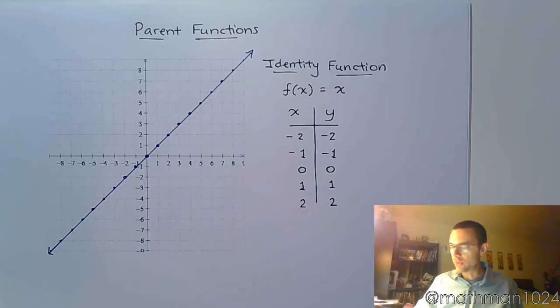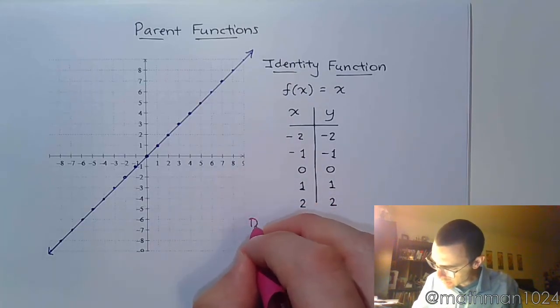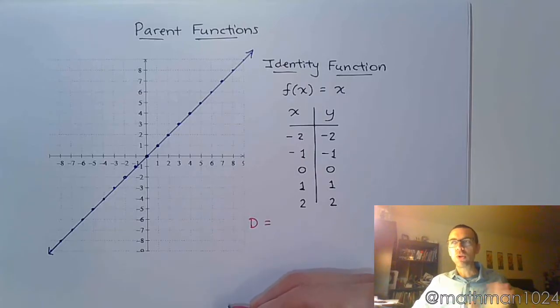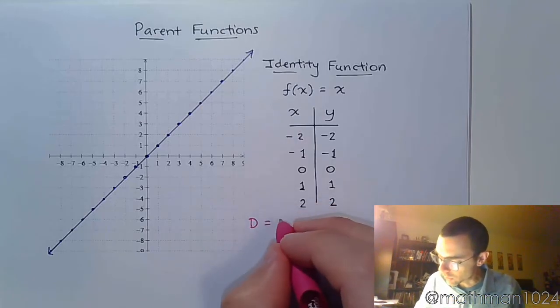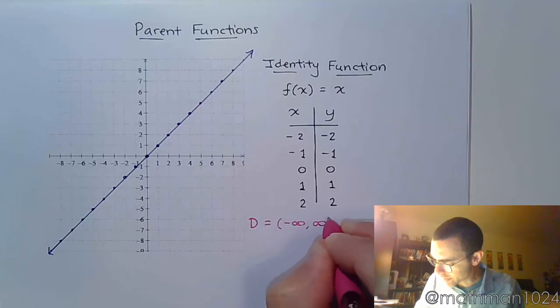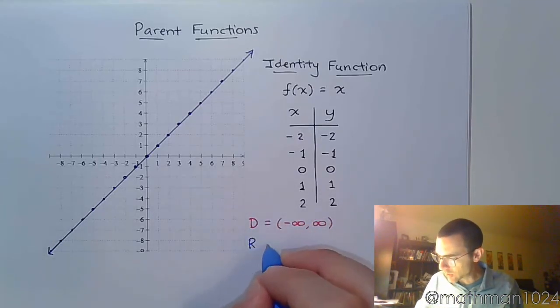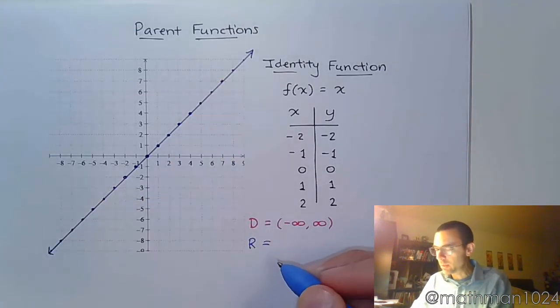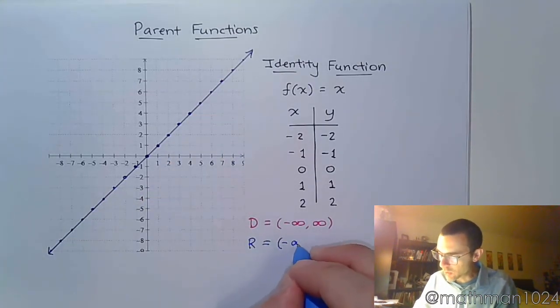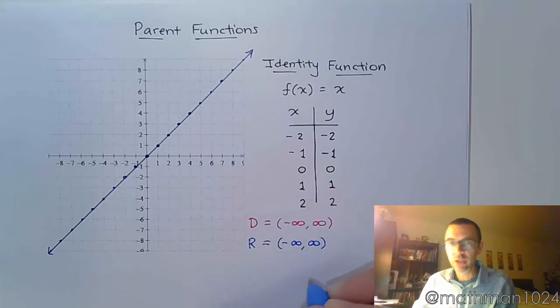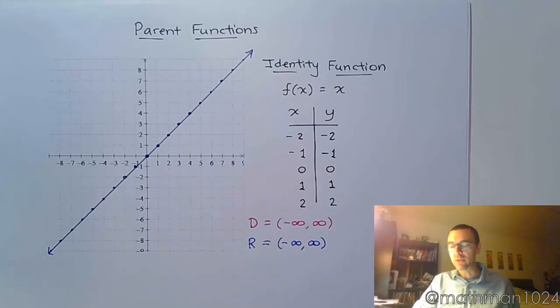So, let's talk about the domain and range. We mentioned before that the domain should be all real numbers for pretty much everything we see, unless you run across two things right now. That would be fractions and square roots. We don't have a fraction, we don't have a square root, so the domain here should be all real numbers. And what about the range? Let's see. You notice here the range goes all the way down. It goes all the way up. So, the range is also going to be all real numbers. So, this is the identity function.